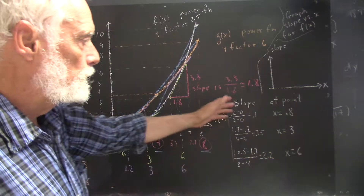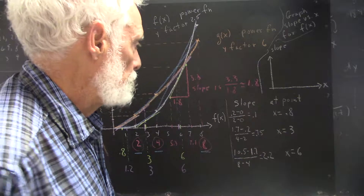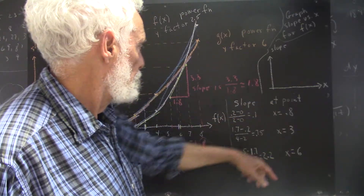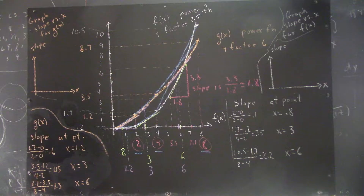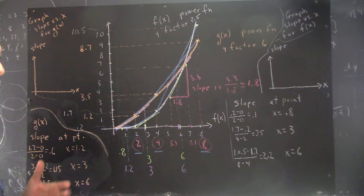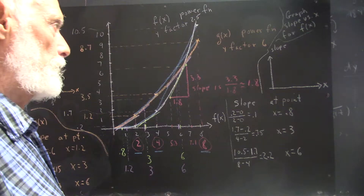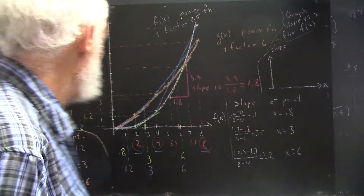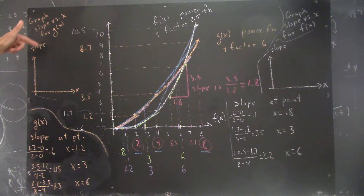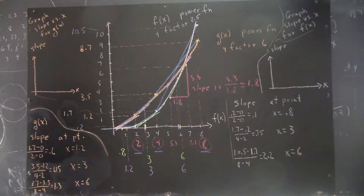We've only got three slopes at three points — remember, the points are where the tangent line touches the graph. Same over here: three slopes for three points. But that's sufficient to at least give us an approximate graph of the slope versus x for the f(x) function and for the g(x) function. I'd like you to construct that graph, and in the next clip I'll go ahead and do so.